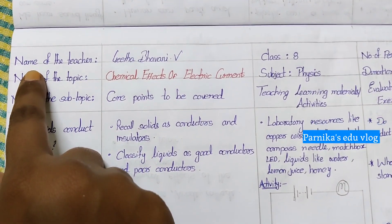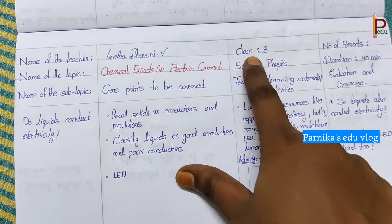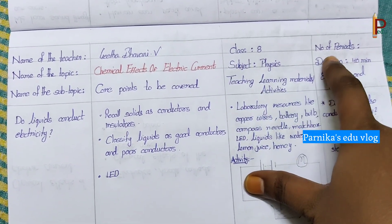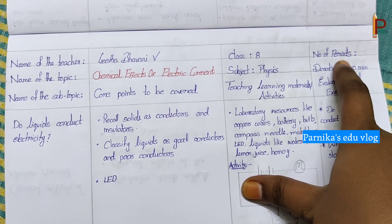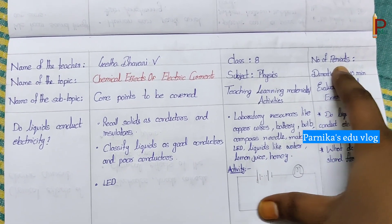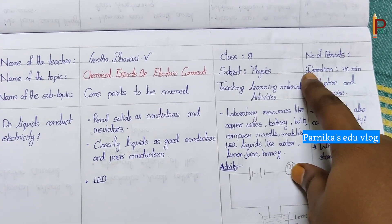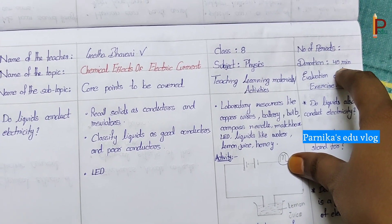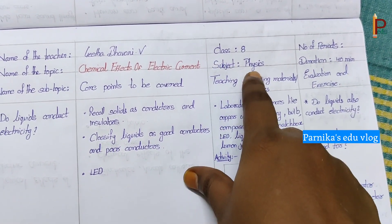First we have to write the name of the teacher. Next, class 8. Then the number of periods required — it will take hardly 7 to 8 periods because it contains activities, so it will take time. Next, duration of the class we have to write here. Subject: physics.